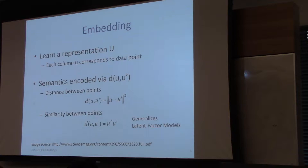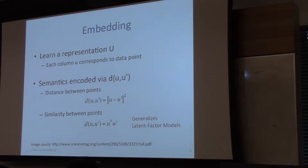The semantics can be encoded either by the distance between two points in the embedding — if two items associated with U and U-prime are close together, that means they share similar semantics. On the other hand, you can also encode semantics via similarity between points, which is usually formalized as the inner product between those corresponding representations U and U-prime. This is just a dot product, and in this sense it generalizes the factor models, because factor models do the exact same thing.